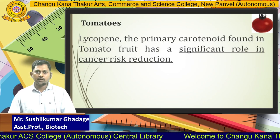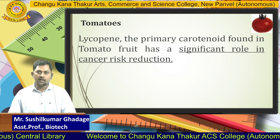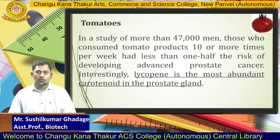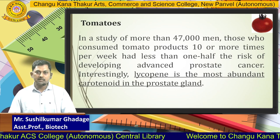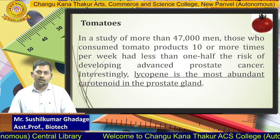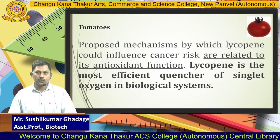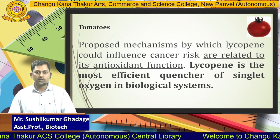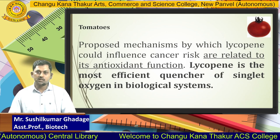Lycopene is one of the primary carotenoids found in tomato fruit and has a significant role in cancer risk reduction. In a study of more than 47,000 males, those who consumed tomato products 10 or more times per week had less than half the risk of developing advanced prostate cancer. Lycopene is also the most abundant carotenoid in the prostate gland, and its proposed mechanism for influencing cancer risk is related to its antioxidant function as the most efficient quencher of singlet oxygen in biological systems.